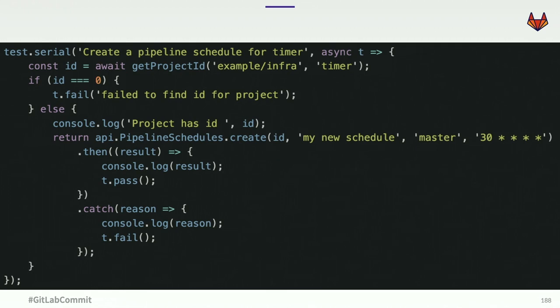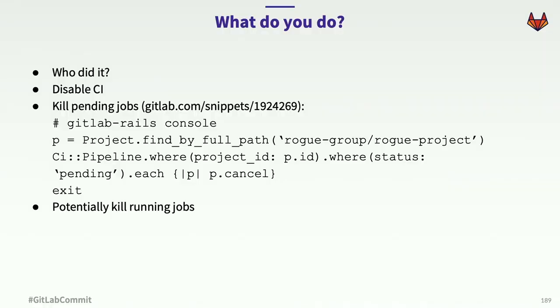It's a pretty easy mistake to make. His assumption was that the create function would not create a scheduled task if one already existed that matched. The fix is to check all the scheduled jobs, see if the one you want exists, and only create it if it doesn't. But something as simple and benign as this could easily take down your system. So what do you do when this happens? First you have to find out what project did it.